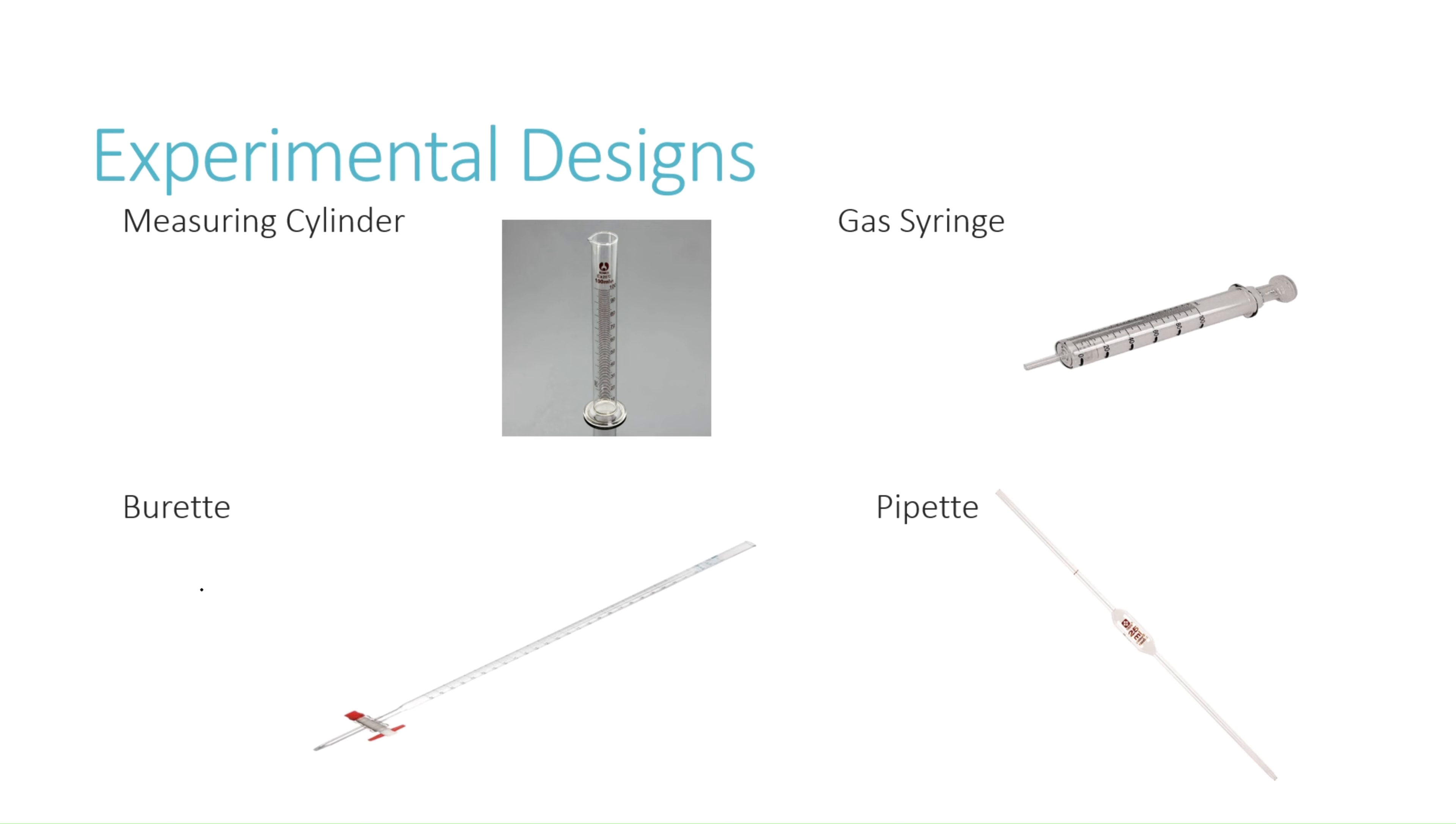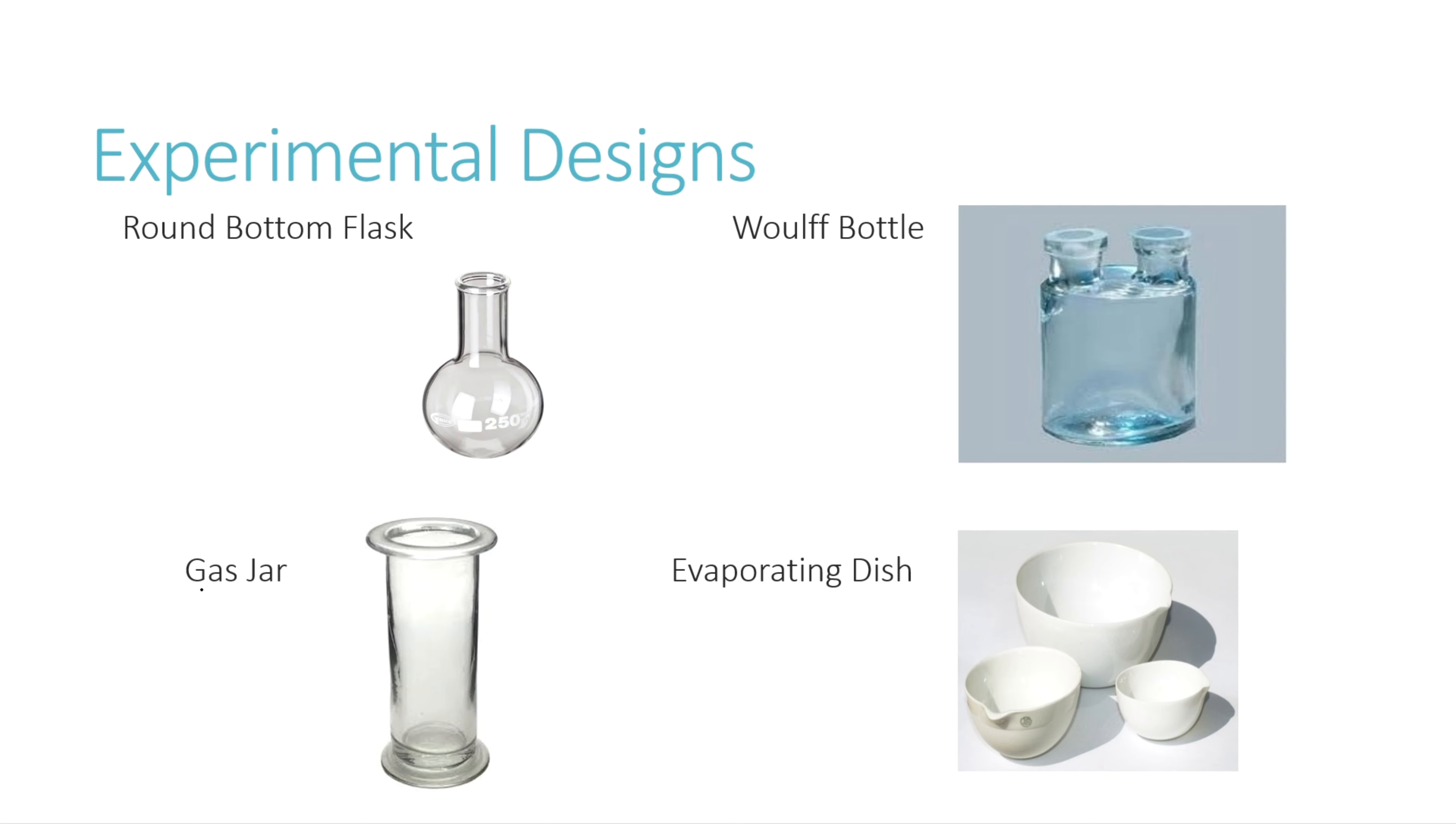Now you can see a round bottom flask. It has a spherical bottom, so these are mostly used when uniform heating is required. Then a gas jar. A gas jar is used to collect gases that are formed during the experiment. Woulff bottle is a vessel with two or three necks or outlets and are mostly used for washing or absorbing gases. An evaporating dish is used to evaporate liquids and to concentrate a dilute solution by heating it.